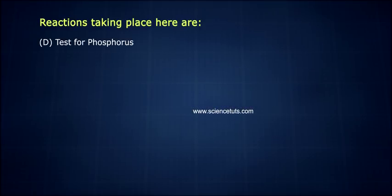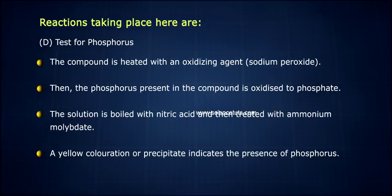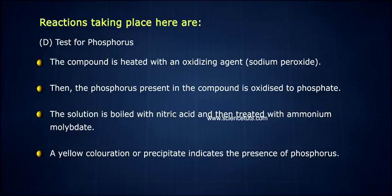Test for Phosphorus. The compound is heated with an oxidizing agent, sodium peroxide. The phosphorus present in the compound is oxidized to phosphate. The solution is boiled with nitric acid and then treated with ammonium molybdate. A yellow coloration or precipitate indicates the presence of phosphorus.